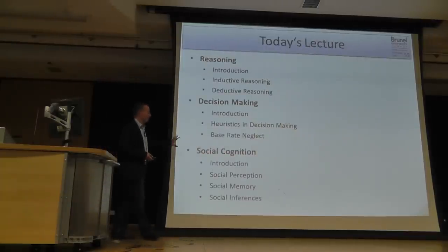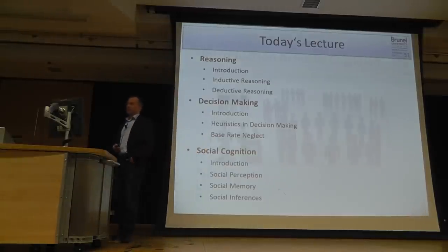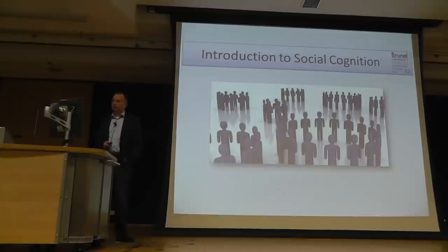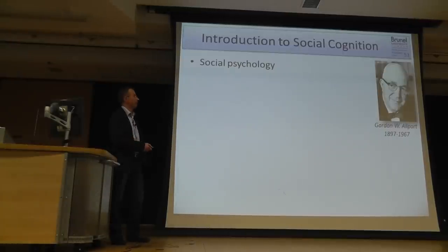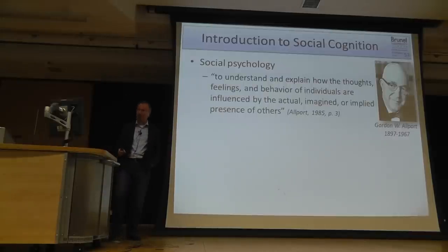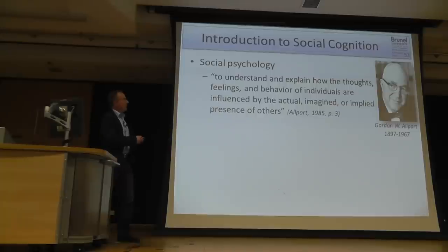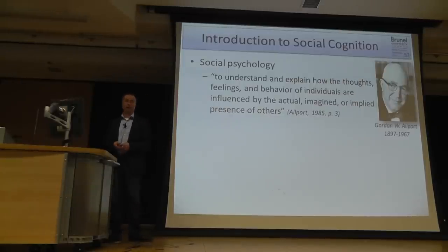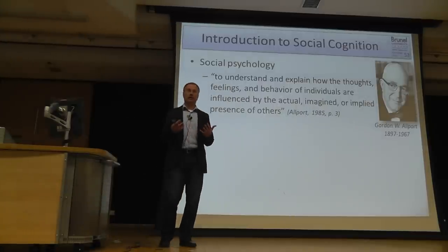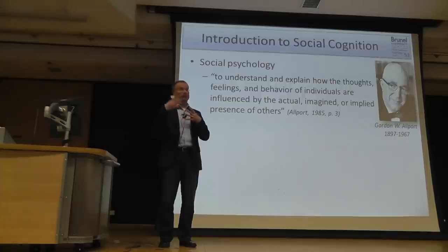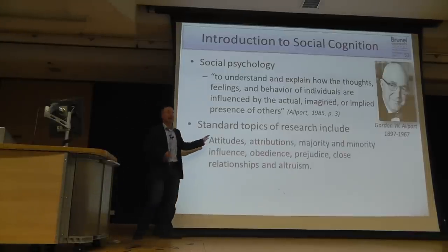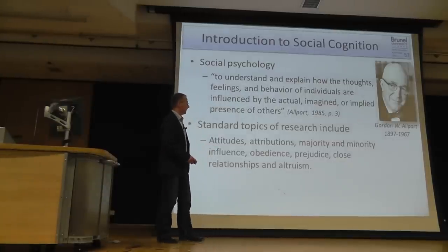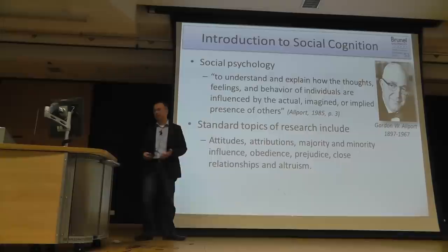Let's get to the last part: social cognition. Social psychologist Gordon Allport defines social psychology as aiming to understand and explain how our thoughts, feelings, and behavior are influenced by the actual, imagined, or implied presence of others. Standard topics of social psychology research include attitudes towards other people, attributions, the influence of majority or minority, obedience, and prejudice.